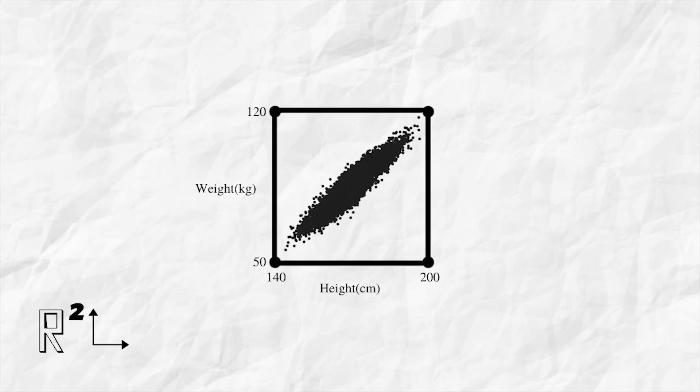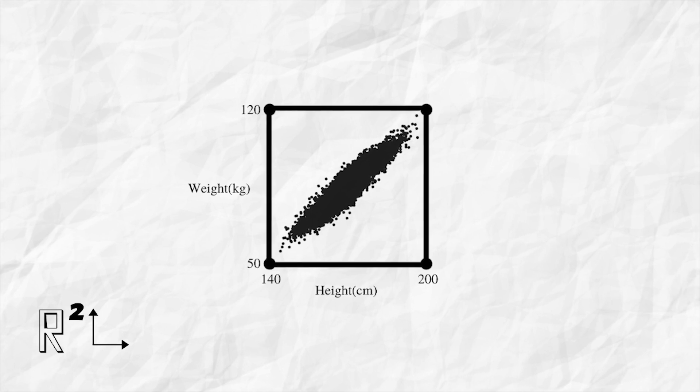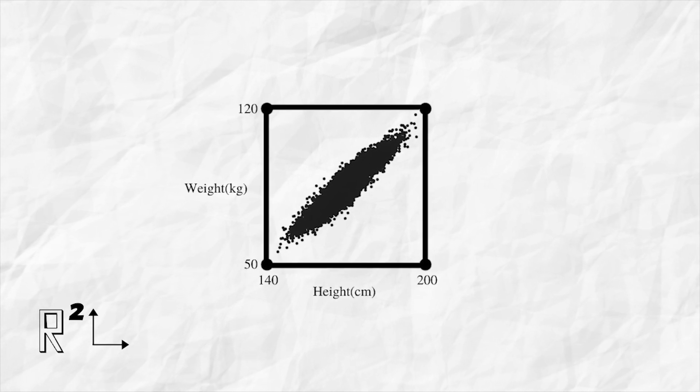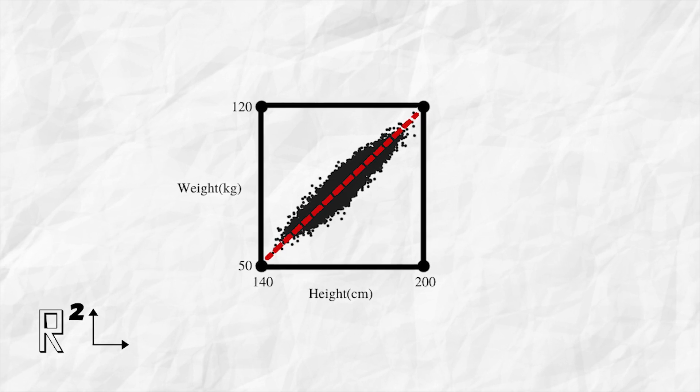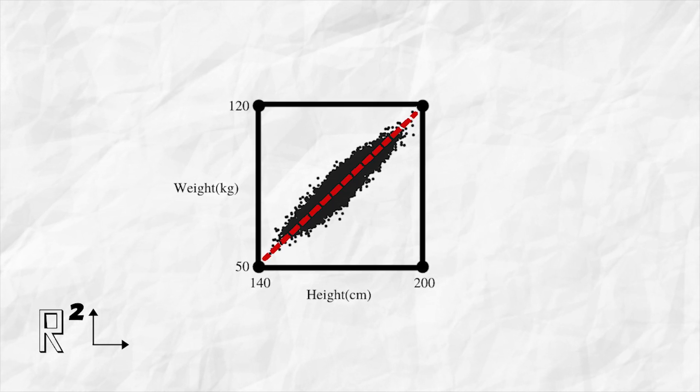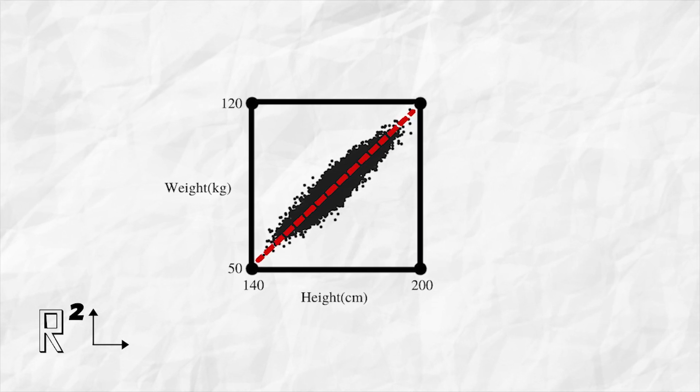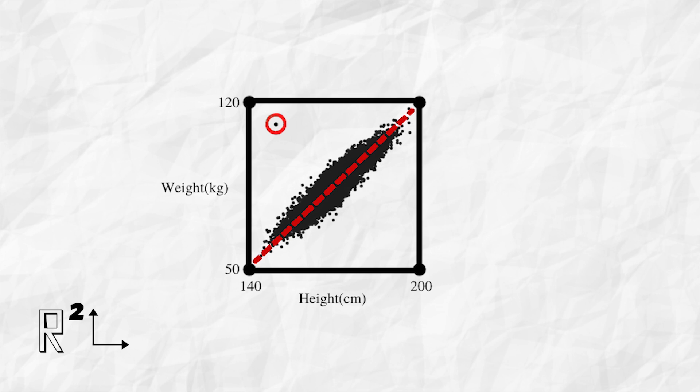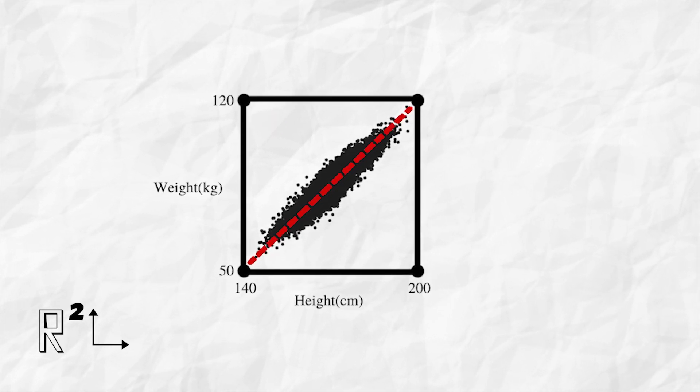In this plot, we can observe that there is a correlation between height and weight in humans. We can say that all these points lie on or near a one dimensional manifold. This is an example of naturally occurring data having few underlying degrees of freedom. Physical bounds prevent us from observing a data point let's say over here. It is not possible to observe a weight vs height distribution which looks like this.